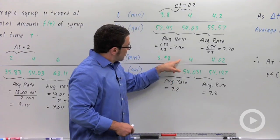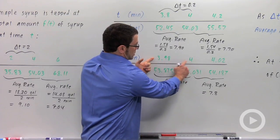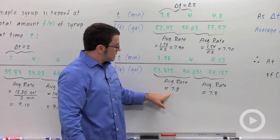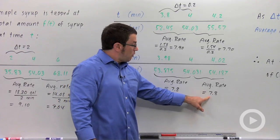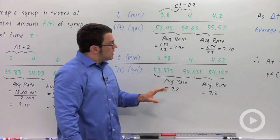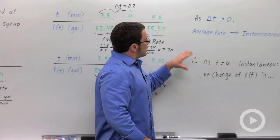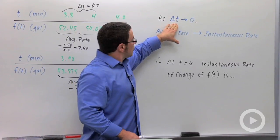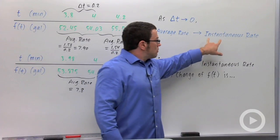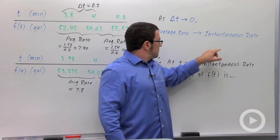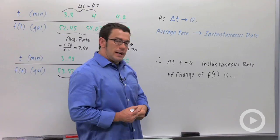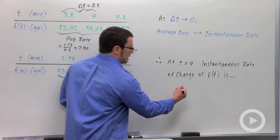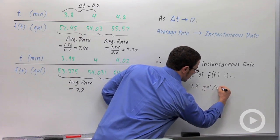Finally, when my increment is as small as 0.02, my average rate is the same to the nearest tenth: 7.8 gallons per minute. The idea behind instantaneous rate of change is that as delta t approaches 0, the average rate of change approaches the instantaneous rate of change. And so in our example, at t equals 4, the instantaneous rate of change is the value that was approached: 7.8 gallons per minute.